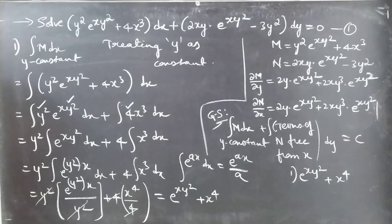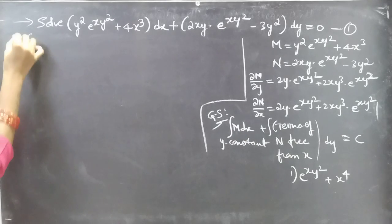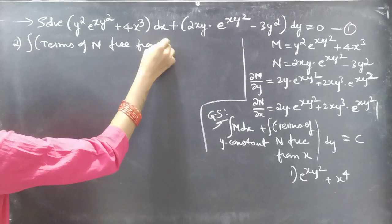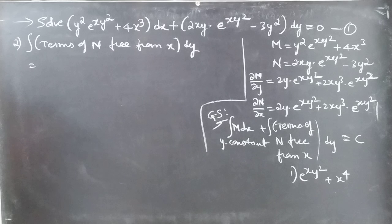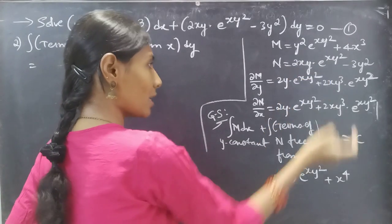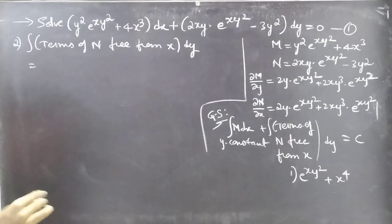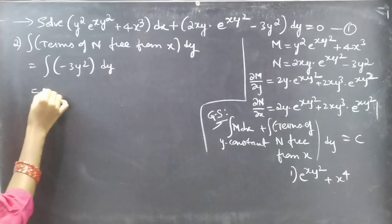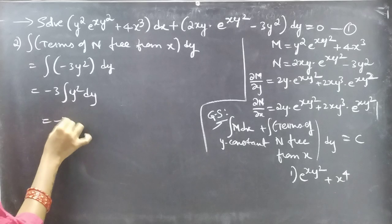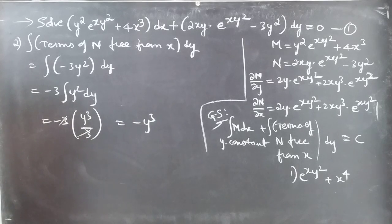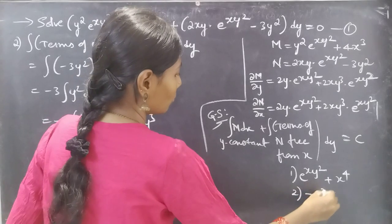Second integral: ∫(terms of N free from x) dy. Observing N = 2xy · e^(xy²) − 3y², the term free from x is −3y². So the integral is ∫(−3y²) dy = −3 · y³/3 = −y³. The result from the second integral is −y³.